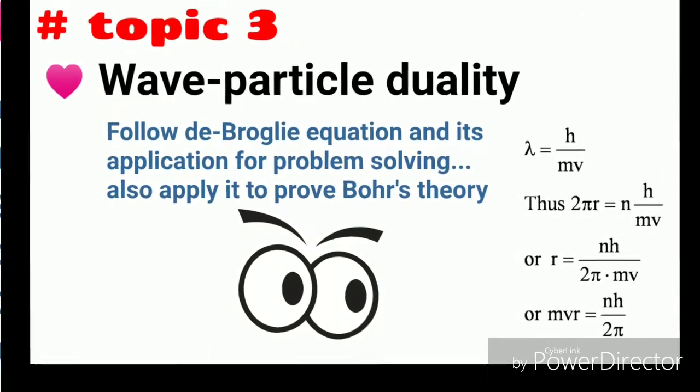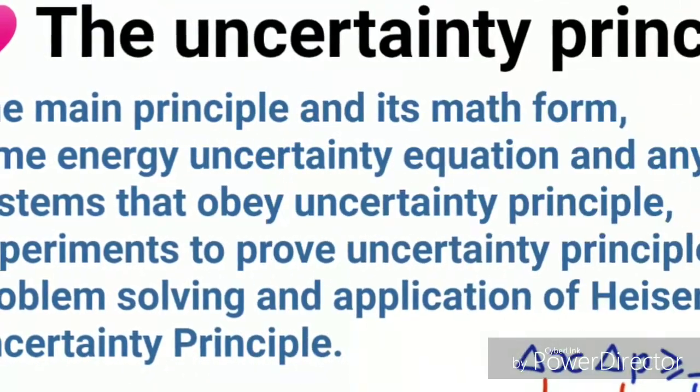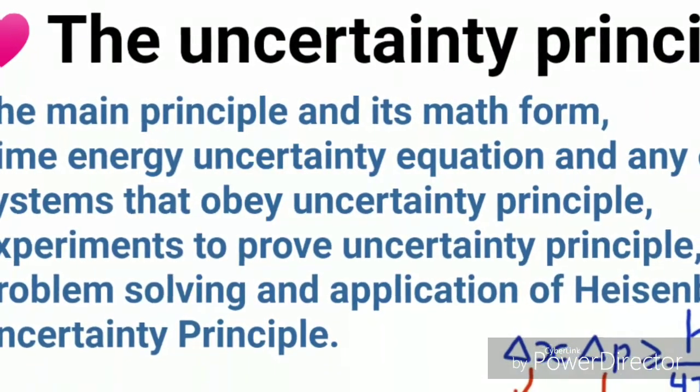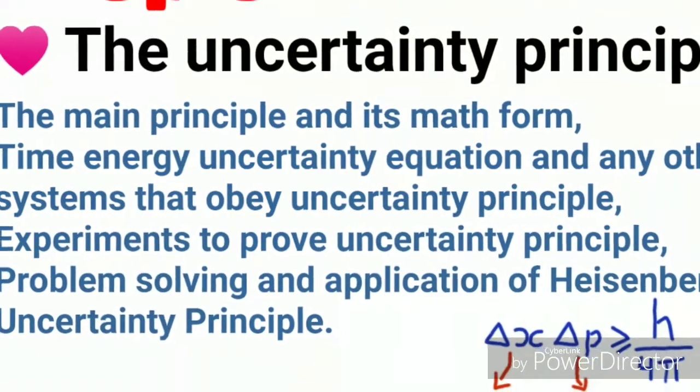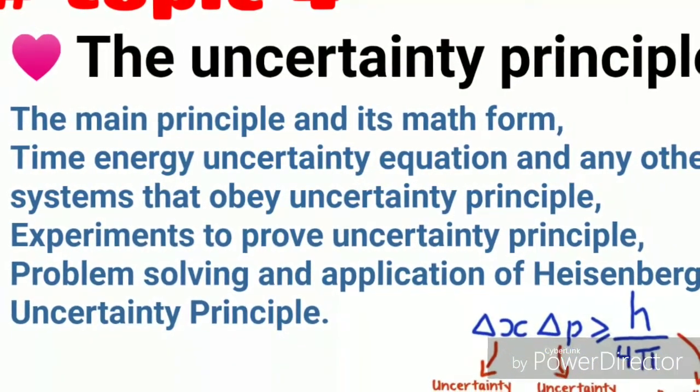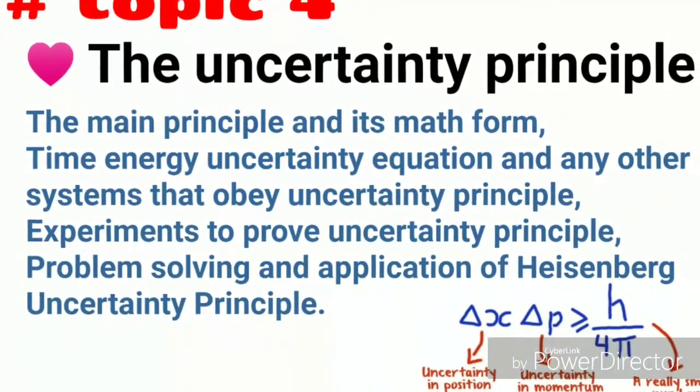Fourth is uncertainty principle - the main principle and its mathematical form, time-energy uncertainty equation, and any other systems that obey uncertainty principle, experiments to prove Heisenberg uncertainty principle, problem solving and application of Heisenberg uncertainty principle.